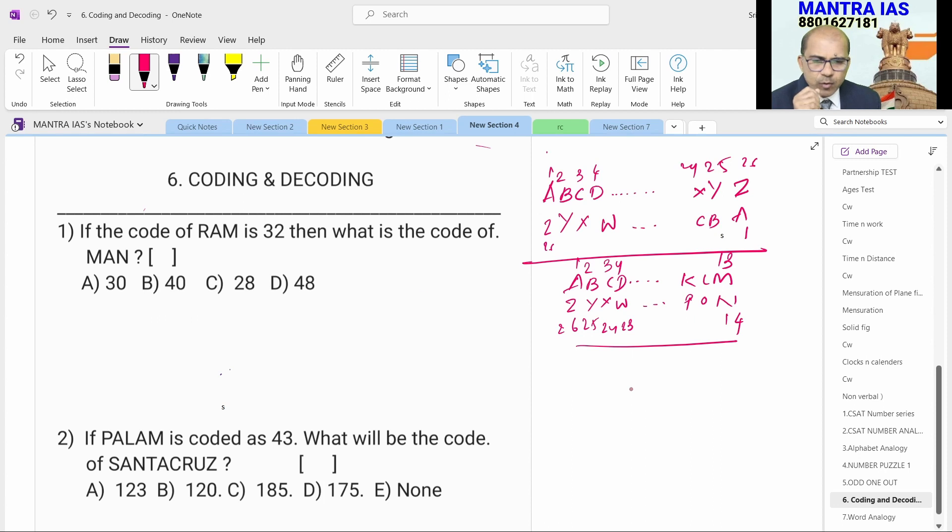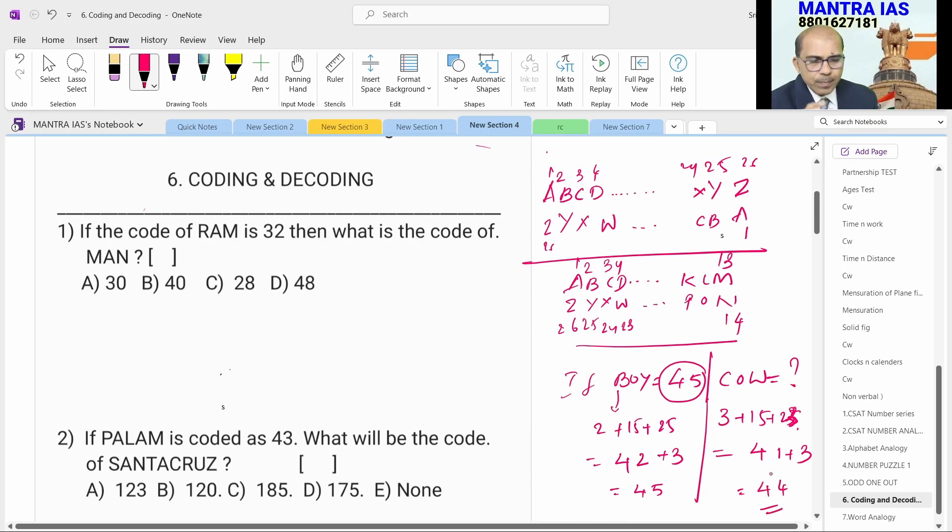Example, I am taking a question here. If BOY is coded as 45, what is the code of COW? B is 2, O is 15, Y is 25. Totally, 15 plus 25, 40 plus 2, 42. But in this case, you mentioned 45. How is it possible? He has added 3 to this one. So, 42 plus 3 is 45.